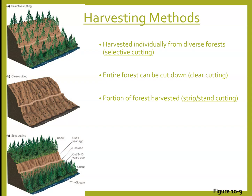There are a couple different methods of harvesting. Selective cutting is where you take some trees from a diverse forest — not all trees are gone; you just take a few and leave some. Clear cutting is what we talk a lot about in this class; it's cutting down an entire forest and it's very ugly. Then there is strip cutting, also called stand cutting, which is taking a portion of the forest and harvesting it — leaving some but stripping away a large section.